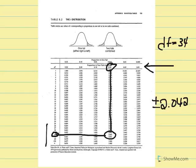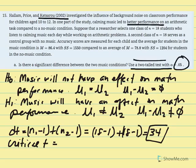We establish the critical region for our test at negative 2.042 and positive 2.042. Now we need to calculate our t statistic. T equals the sample mean difference minus the population mean difference from the null — always zero — over the estimated standard error of the mean difference.